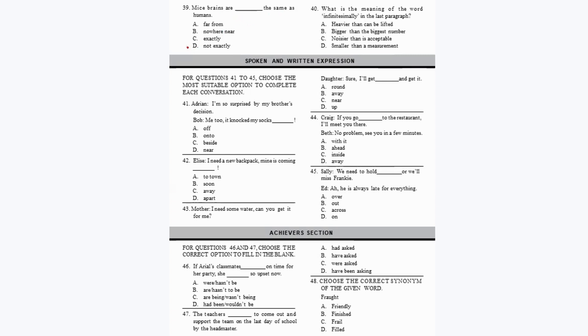Question 39: 'Mice brains are dash the same as humans.' Their brains are not exactly the same as humans — option D. Question 40: What is the meaning of 'infinitesimally' in the last paragraph? It means smaller than a measurement — option D. This completes the second section.